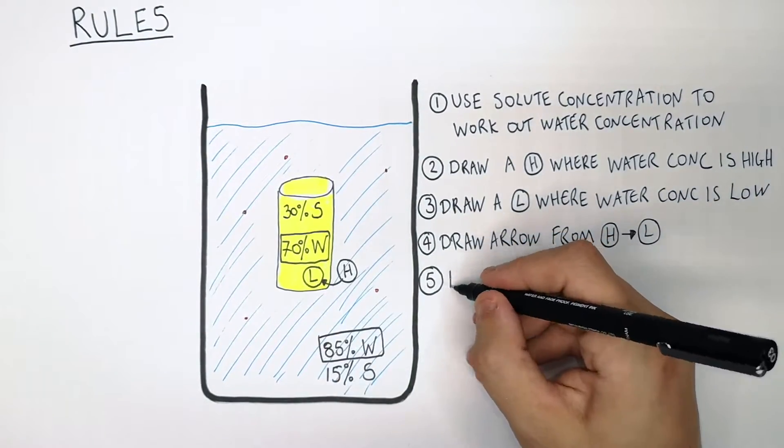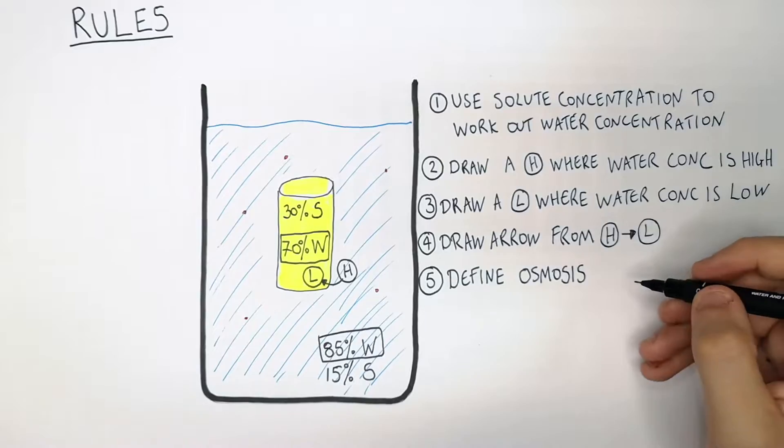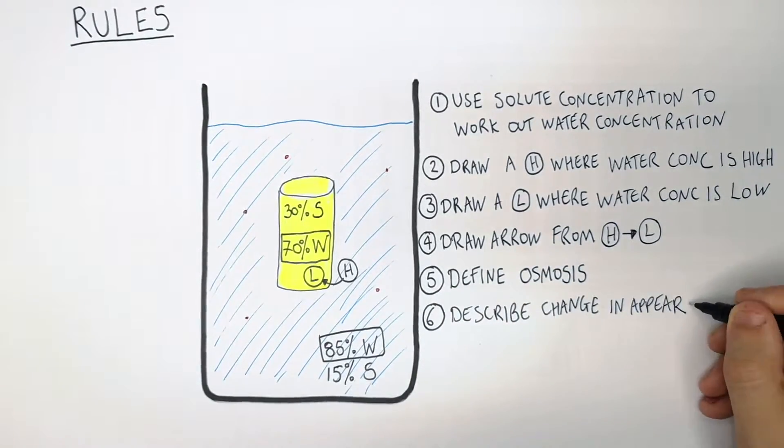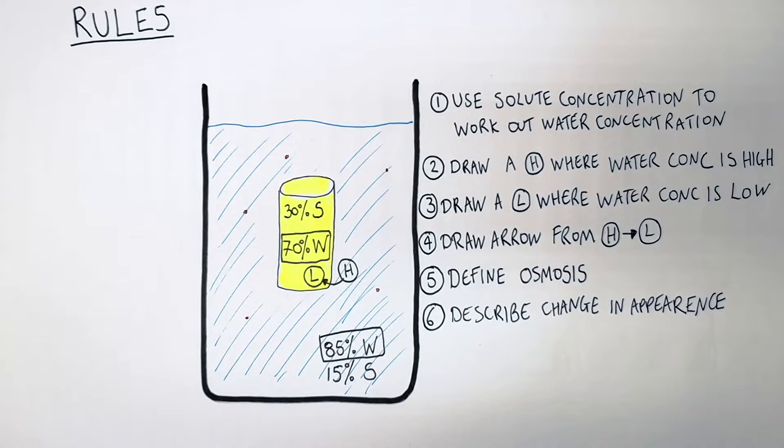Number five, you then define osmosis. Number six, you then need to describe the change in appearance of the potato due to osmosis.